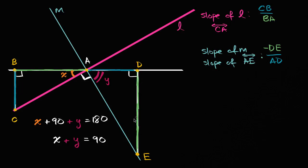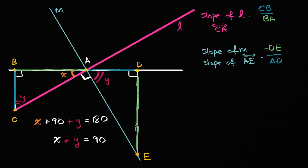How can we use this to fill out some of the other angles in these triangles? In triangle CBA, X plus 90 plus what equals 180? Well, X plus 90 plus Y equals 180 — we already established that. Similarly over here, Y plus 90 plus what equals 180? Same argument: Y plus 90 plus X equals 180.